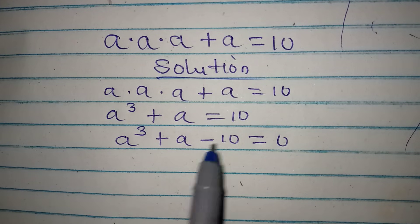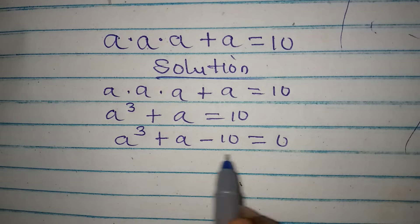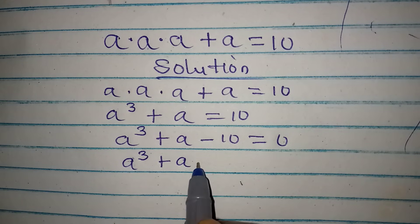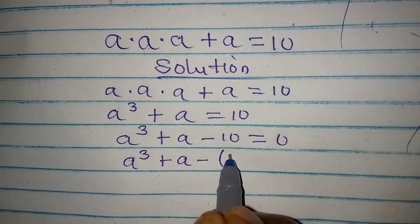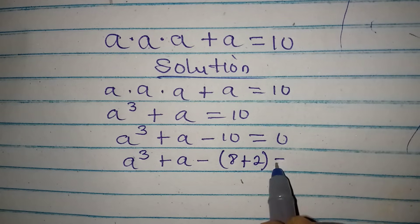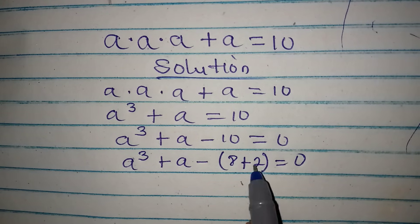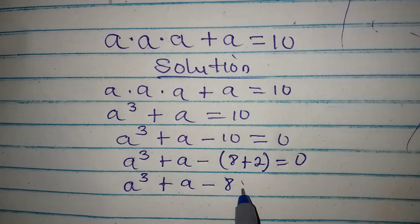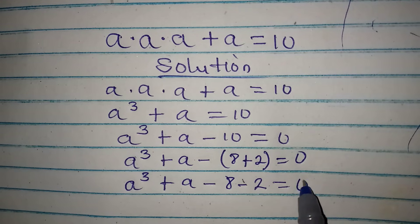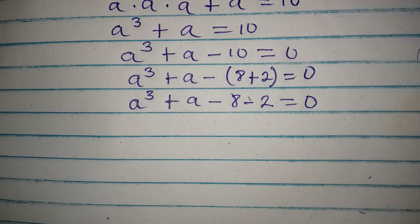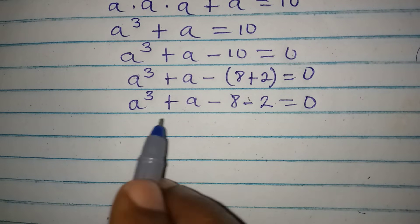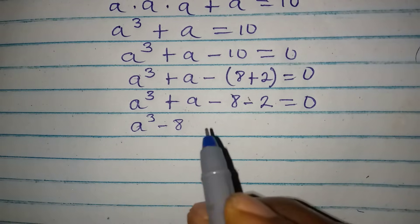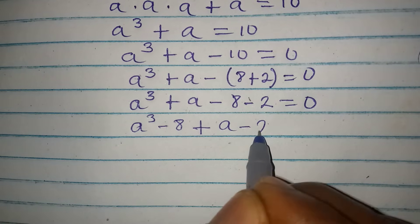This cannot be factorized without breaking 10, so I'll break 10 into 8 plus 2. We have a³ + a - 8 - 2 = 0. Now grouping, 8 can be written as a number raised to a power of 3, so we put a³ - 8 together and a - 2 together.